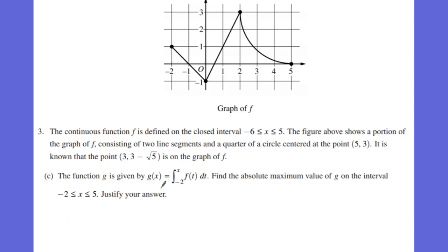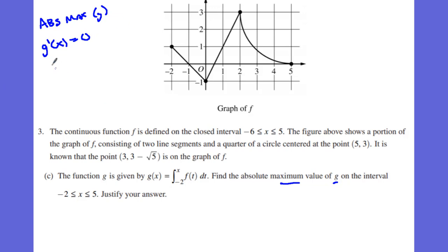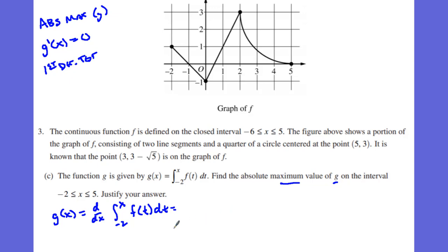Now let's go on to C. We have a function g of x, where g of x equals the integral from negative two to x of f of t dt. The fundamental theorem of calculus shows up again, and we want to find the absolute maximum value of g. To find the absolute maximum, we need to take the derivative of g of x and set it equal to zero — that's the first derivative test. Taking the derivative of the integral from negative two to x of f of t dt, by the FTC we get f of x, and we set that equal to zero.